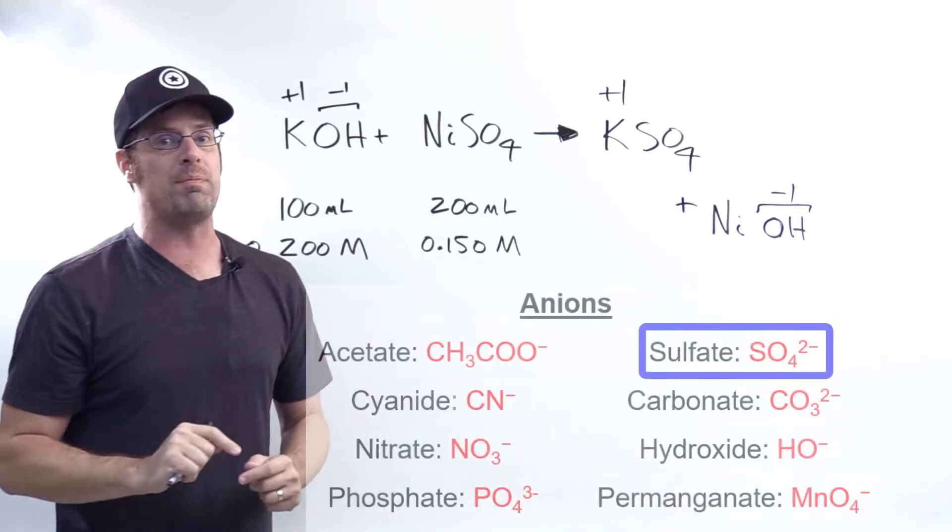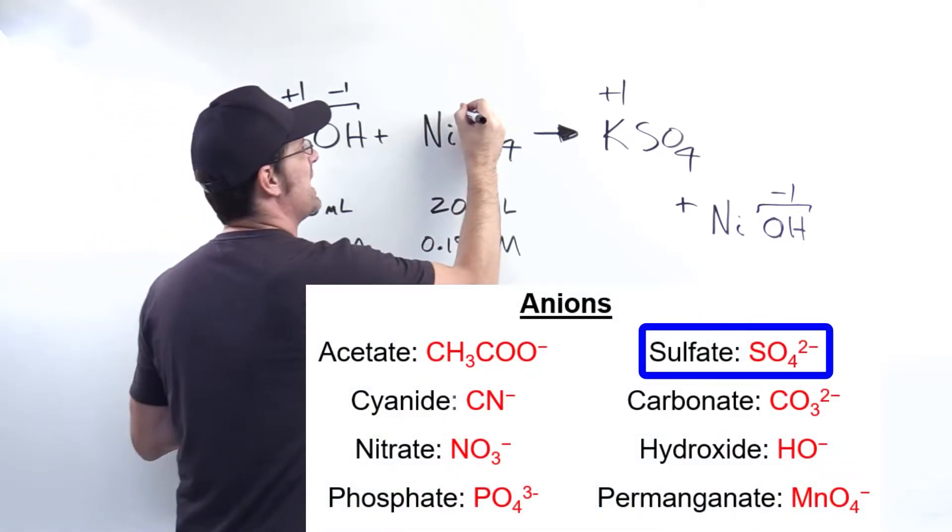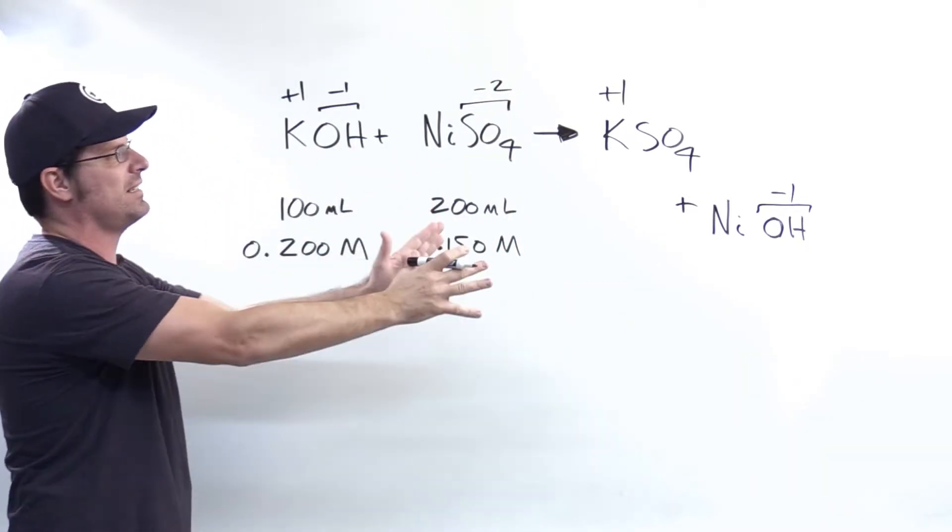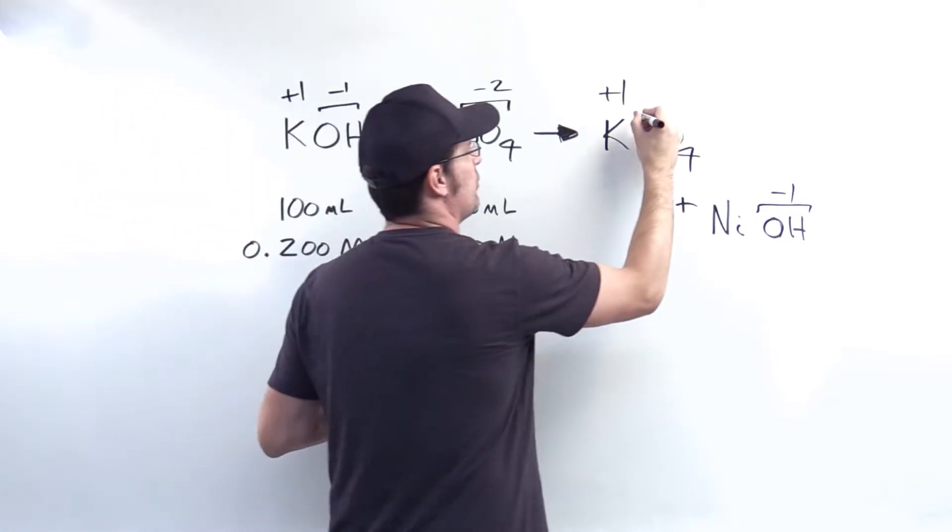By picking it from the sulfate. Sulfate, being a polyatomic we should memorize, has a negative two charge. And again, because this is not a redox reaction, my charges will carry over exactly the same. They are not going to change, so I have sulfate over here.